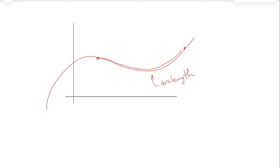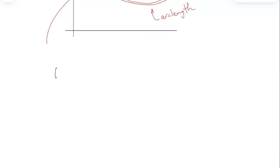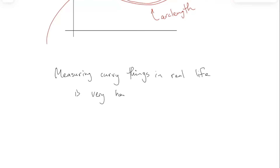This is something I was not aware of when I was a student — I first learned about this maybe 10 years ago. It's about just measuring curvy things in the real world. Measuring curvy things in real life is actually very hard. There are some special instruments for doing this in real life, like a wheel at the end of a stick you can push around and measure something curvy, or some kinds of flexible rulers.